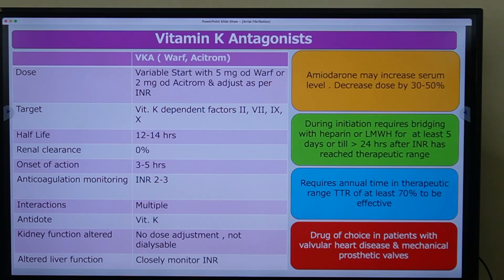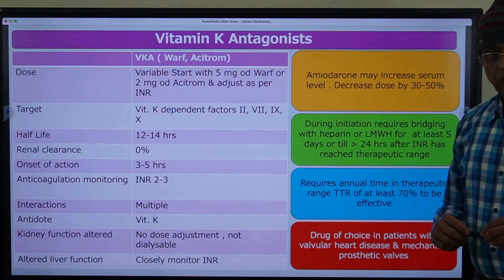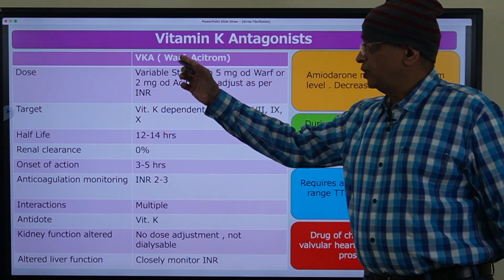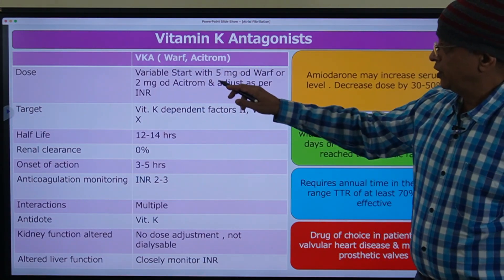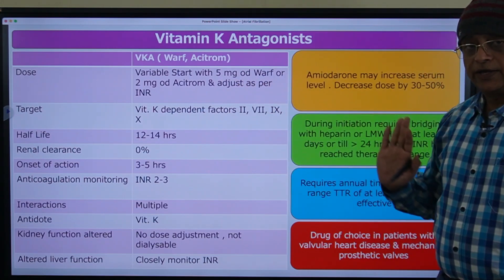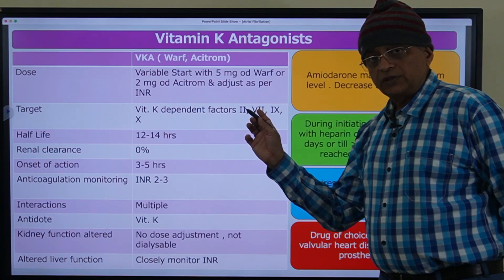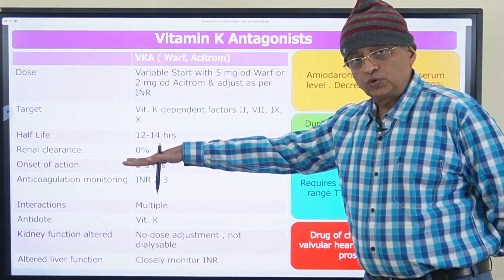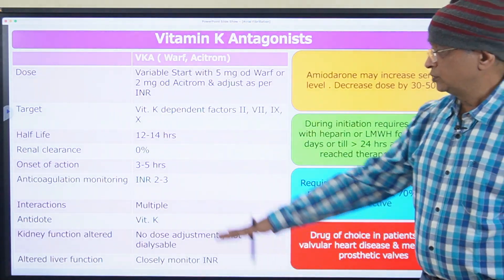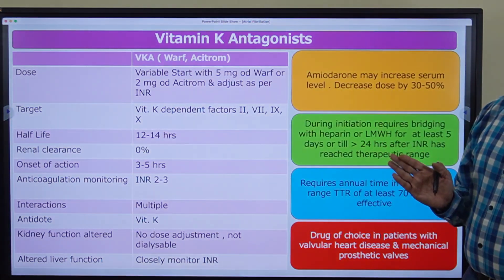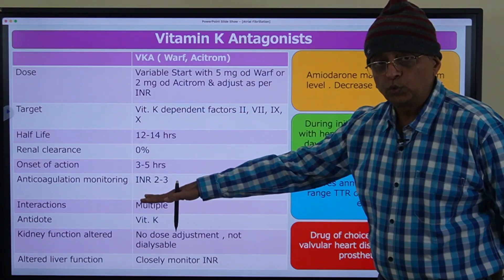In severe renal failure and patients with prosthetic mechanical valves or severe mitral stenosis, use vitamin K antagonists — warfarin or acenocoumarol. Warfarin starting dose is 5 mg OD and acenocoumarol is 2 mg OD, adjusted per INR. The target factors are vitamin K-dependent factors II, VII, IX, and X. Half-life is 12 to 14 hours, with no renal clearance, so these can be given in renal failure. Anti-coagulation monitoring requires keeping INR continuously between 2 to 3.